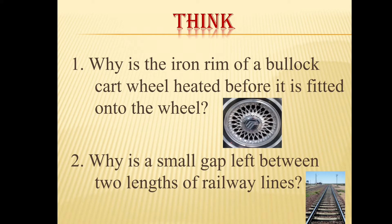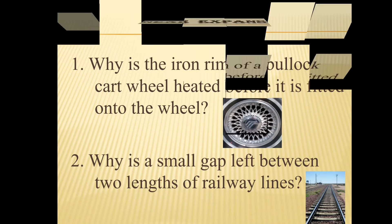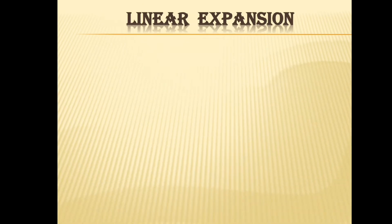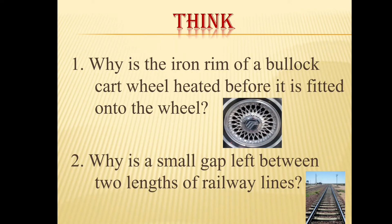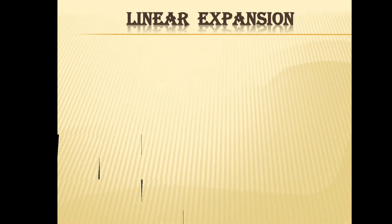These are examples of linear expansion. For the linear expansion activity, we are taking a bulb, a dry cell, a candle, and a cycle spoke.